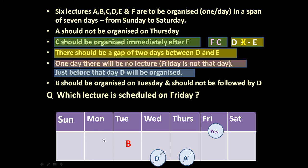D cannot be on Wednesday, D cannot be on Tuesday because B is already there, and D cannot be on Monday because just after D there is no lecture — which would place the off day on Tuesday, but Tuesday has B. So D must be on Sunday. Just after D on Sunday, Monday has no lecture. Tuesday has B, and Wednesday has E. Three places are left for A, F, and C.